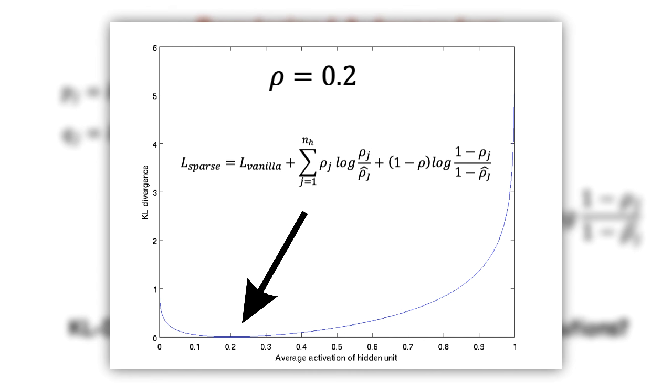We write the overall cost function as a sum of cost incurred from the vanilla autoencoder, plus the weighted sum of KL divergences from every neuron from the threshold.